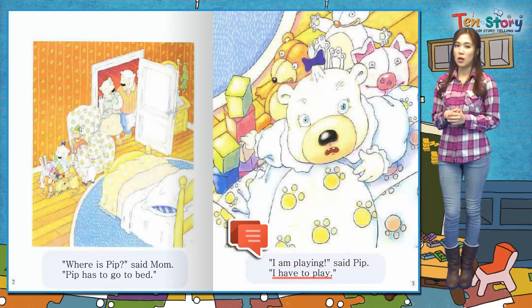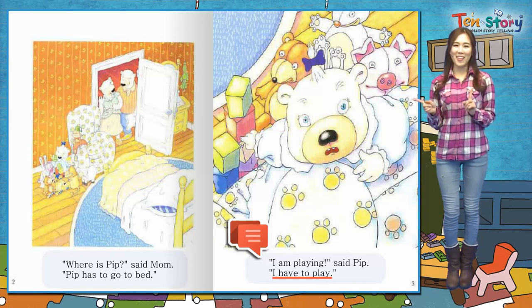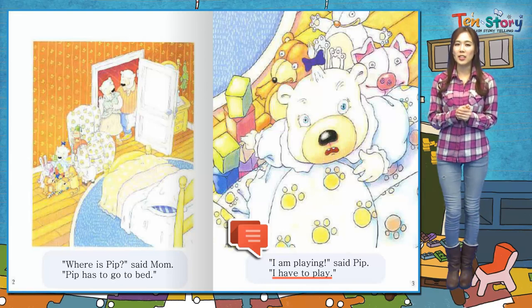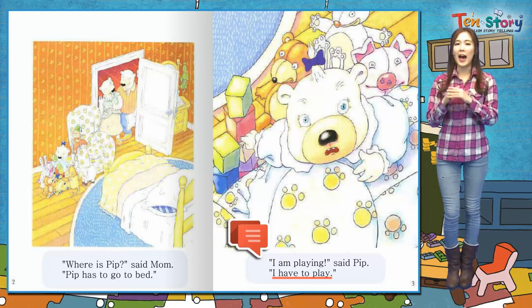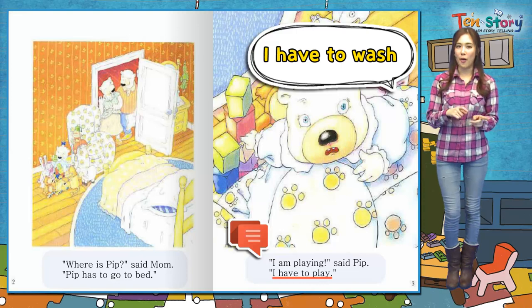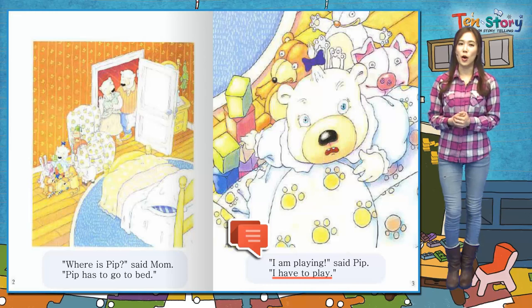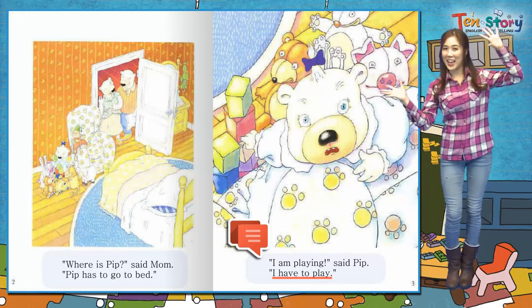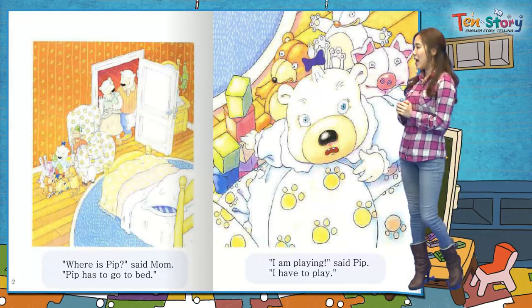I have to play. 나는 놀아야 해요. 나는 무엇을 해야 해요? I have to. 그러면 씻어야 해요 할 때는 I have to wash. 이러죠. 뭐를 해야 해요? I have to eat. 밥을 먹어야 해요. 그런데 여기서는 I have to play, 놀아야 해요. 자야 하는 시간인데.